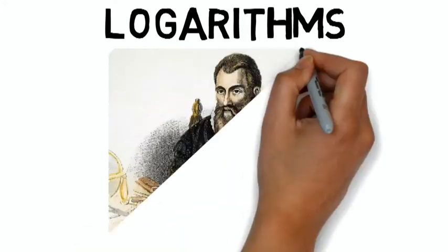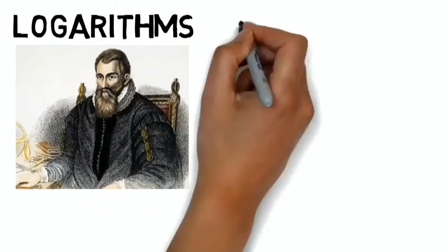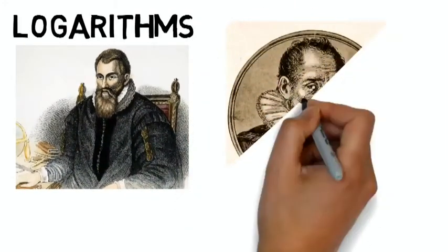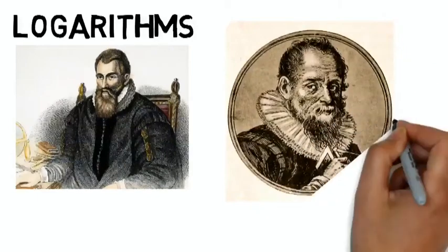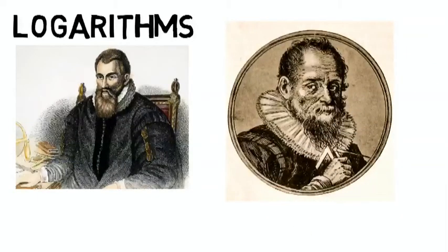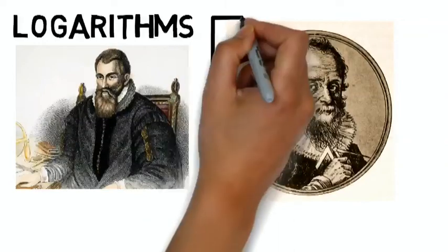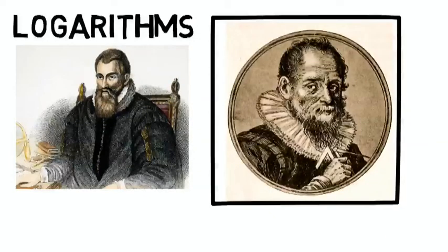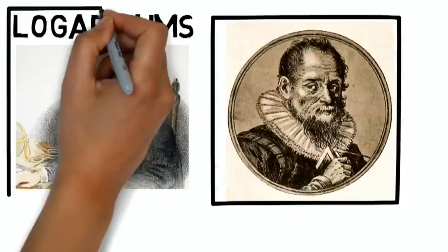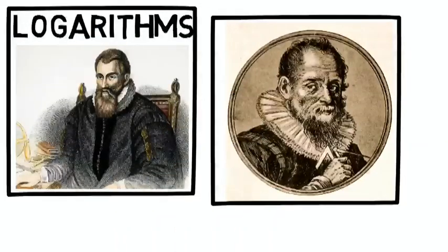The full credit for inventing the logarithm goes to John Napier. But at the same time, a watchmaker named Joost Burgi from Switzerland also came up with the same idea. He published his logarithm a little late than John Napier's logarithm. Hence the inventor of logarithm is John Napier.